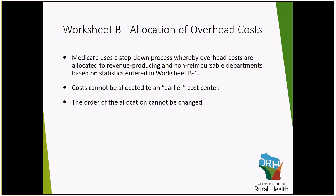A second tip is to consider if there are any specific cost centers that should be fragmented to more appropriately allocate costs to the remaining departments utilizing a different statistic. For example, one cost center that is oftentimes fragmented is buildings and fixtures. If there are new buildings added during a period, it may be more advantageous to fragment that and reflect it as a separate cost center versus lumping it in with all other buildings and fixtures and having all square footage allocate those specific costs.